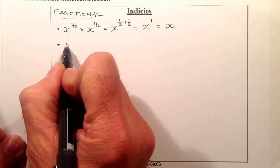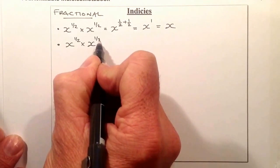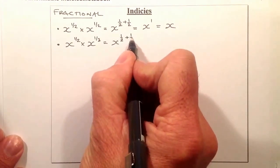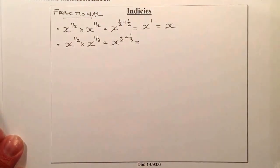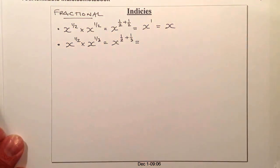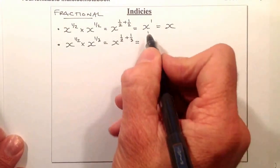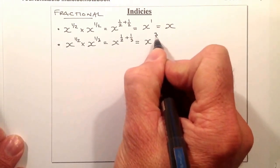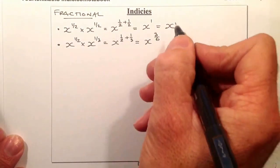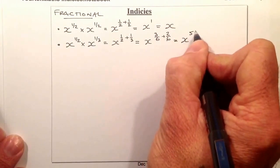Let's look at another fraction. x to the power of a half multiplied by x to the power of a third. Using the same law, we add the indices: a half plus a third. To add those fractions, multiply top and bottom of the half by 3 to get 3 over 6, and multiply the third by 2 to get 2 over 6. That gives x to the power of 5 over 6.